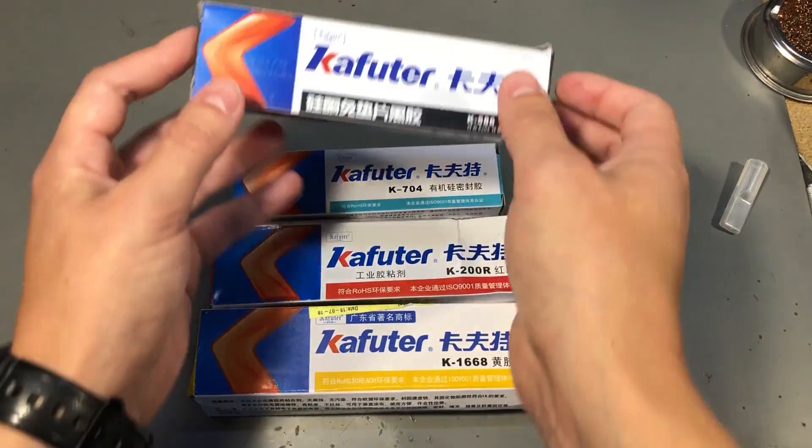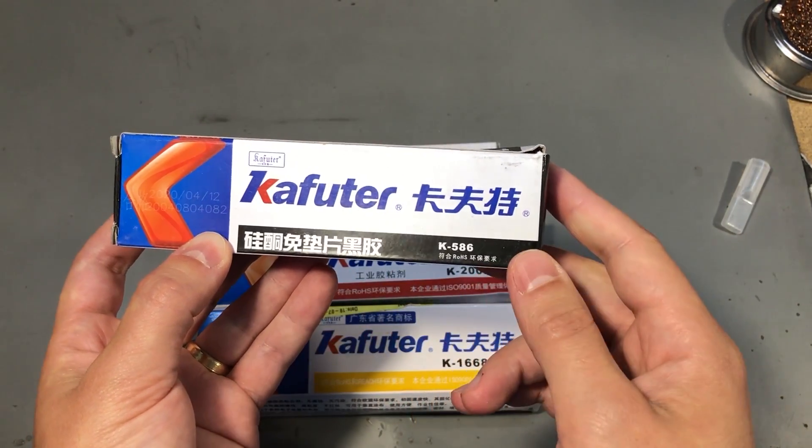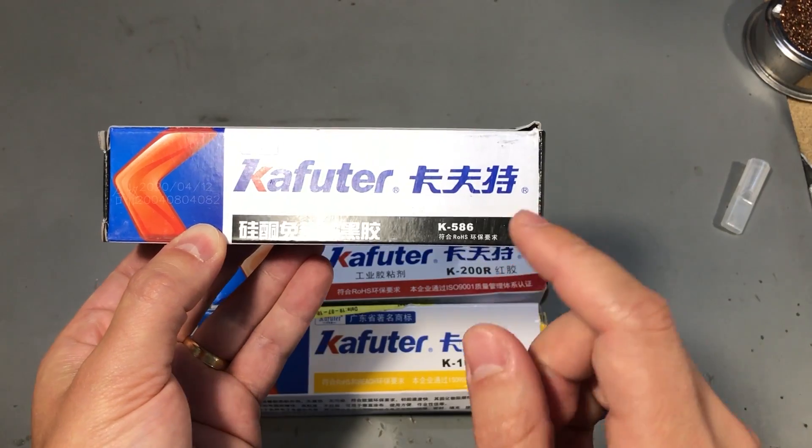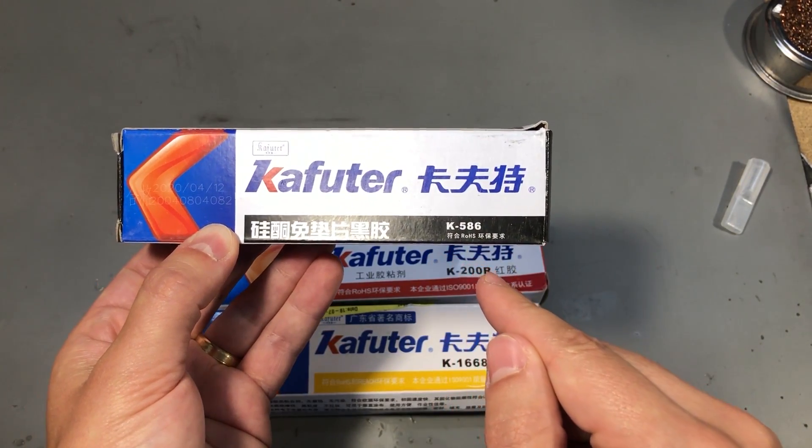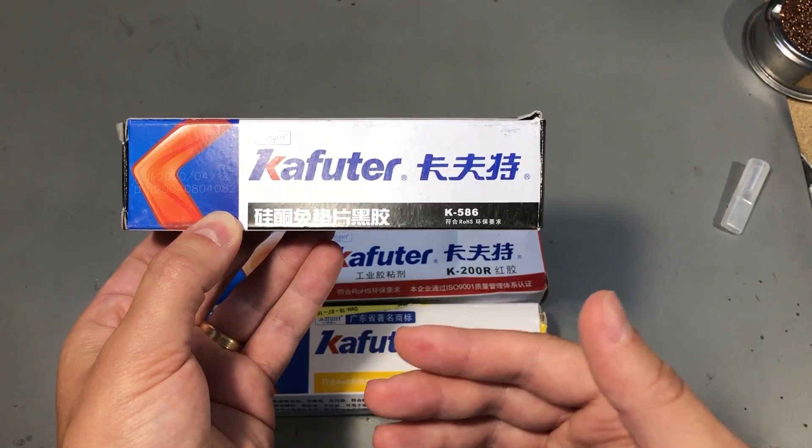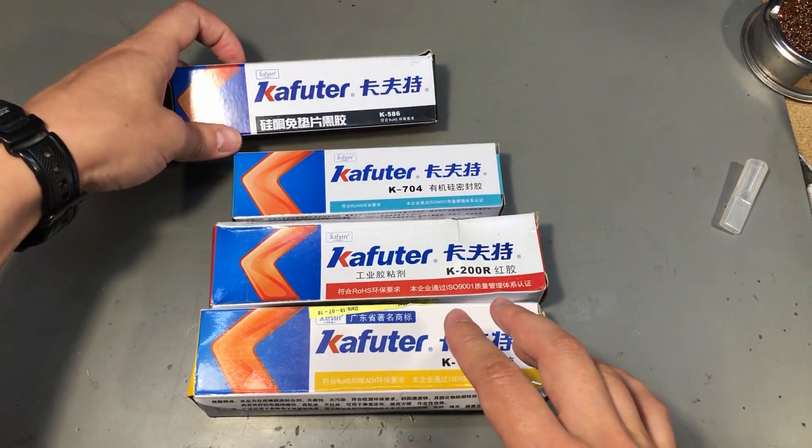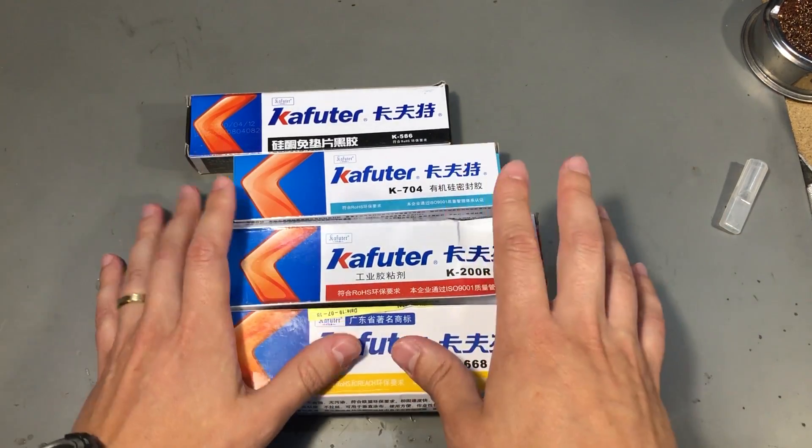Then there is the K586 or black glue. This is also silicon based from what I could translate and is recommended as gasket replacements for mechanical engine parts or for mechanically securing stuff including for electronics. You'll find a link for all of these in the description below and like I said I'll do a separate video on these.